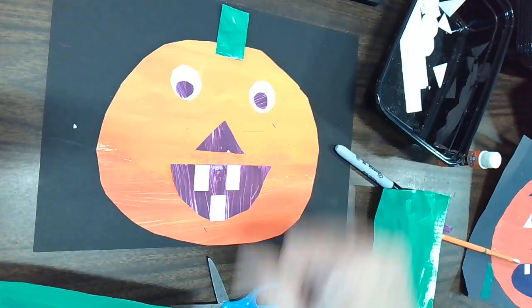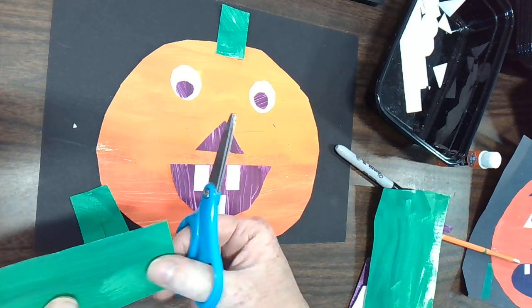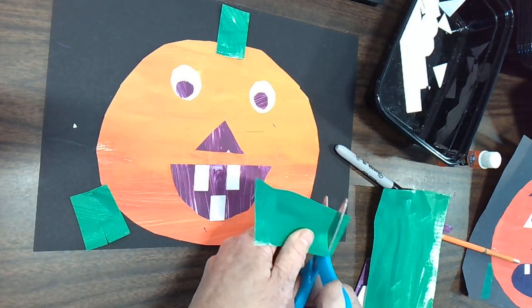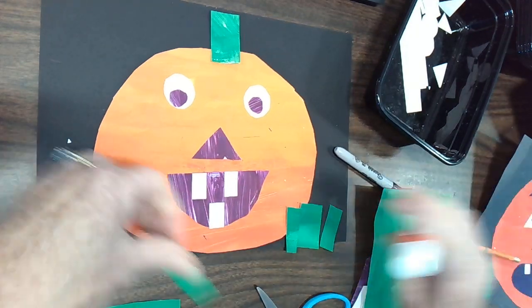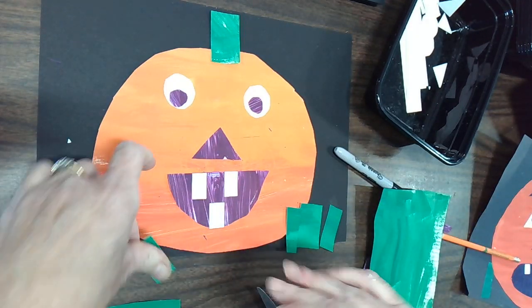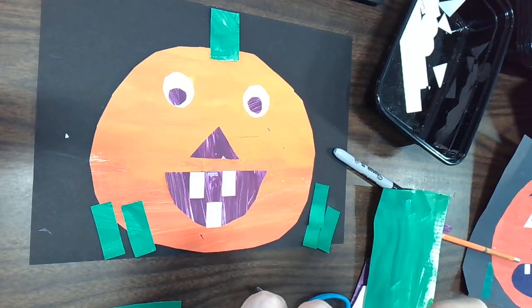And then I can cut several pieces like this for my grass. And then I'm going to stick those down right along the bottom. I could even overlap my pumpkin a little bit so it looks like he's sitting all comfy in the grass like that.